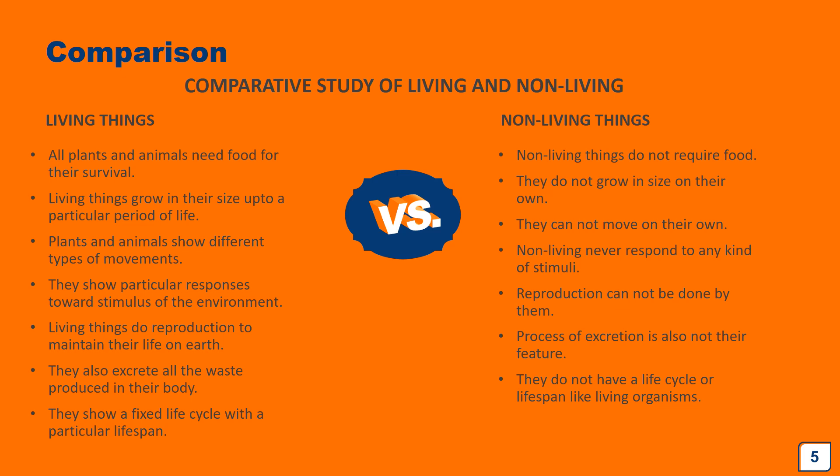Finally, living things have a particular life span. All living organisms take birth, grow, become adults, grow old, and die. This complete cycle from birth to death is called the life cycle, and its duration is called the life span. Different organisms have different life spans. No such life cycle is shown by non-living things.